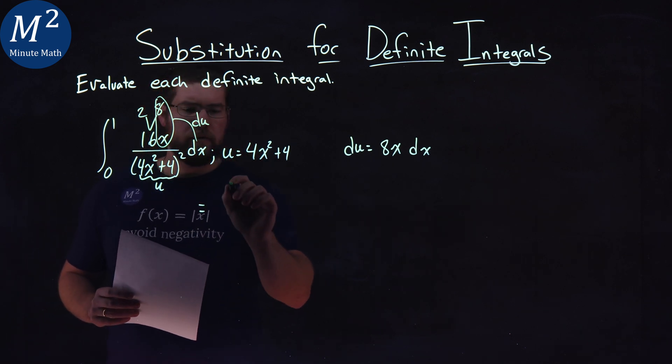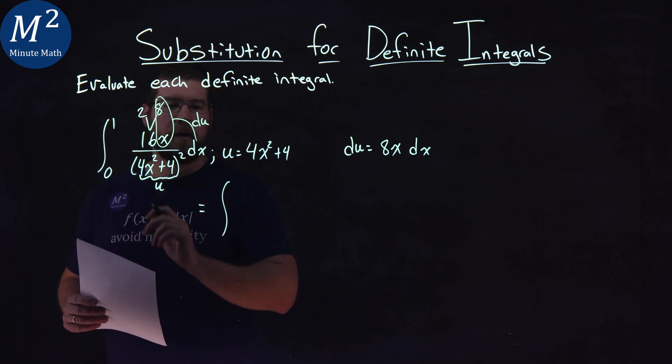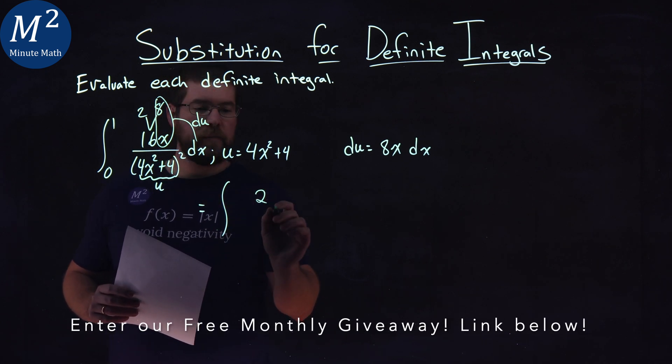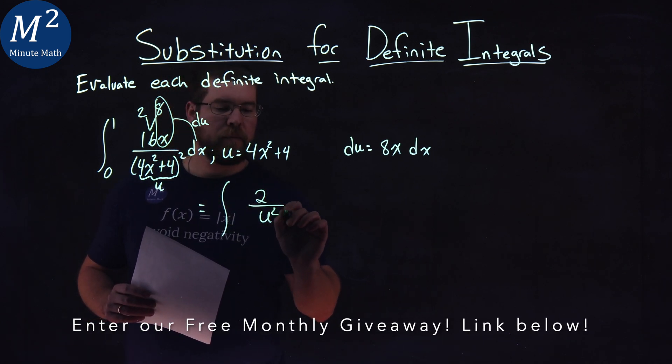So we can rewrite this integral. I'm not going to write it in terms of 0 to 1 yet. We have a 2 left in the numerator over u squared du, but I need to find my bounds from 0 to 1.